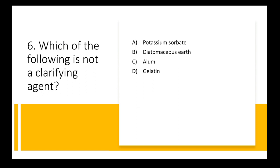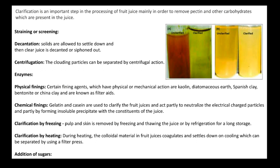Next question: which of the following is not a clarifying agent? Options are potassium sorbate, diatomaceous earth, alum, and gelatin. The answer is option A — potassium sorbate is not a clarifying agent; it is not used in clarification. Diatomaceous earth, alum, and gelatin are all clarifying agents. Clarification is an important step in the beverage industry where suspended particles — fibers, pectin, seeds, tissues — are removed from the beverage.